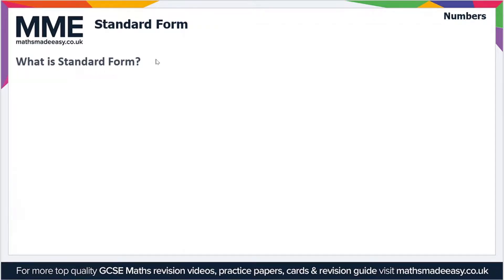But to start with, what is standard form? Well, essentially standard form does what it says on the tin—it's a standardized way of writing any number. So we write this in the form A times 10 to the power n. This is a very useful shorthand way of expressing very large or very small numbers.